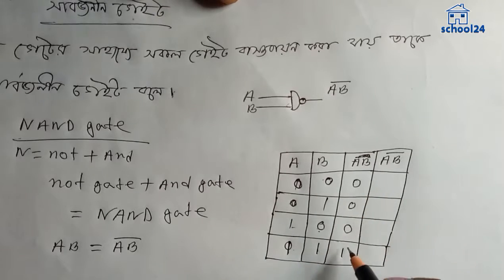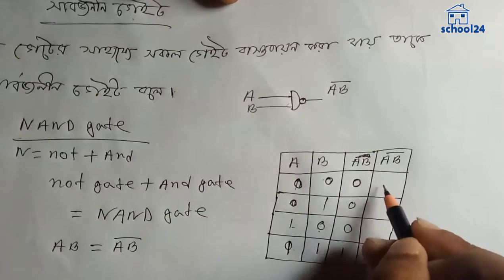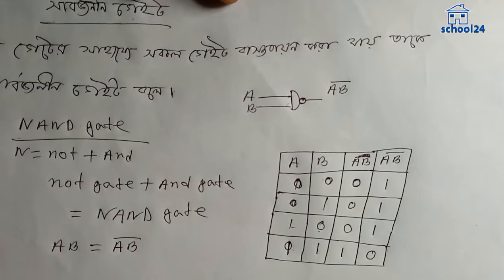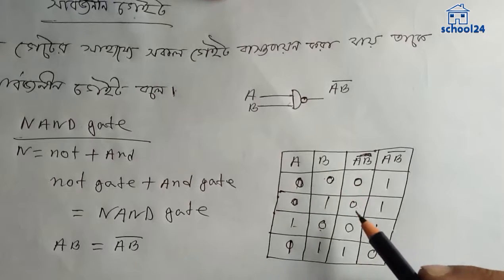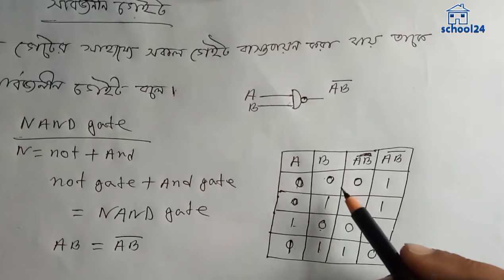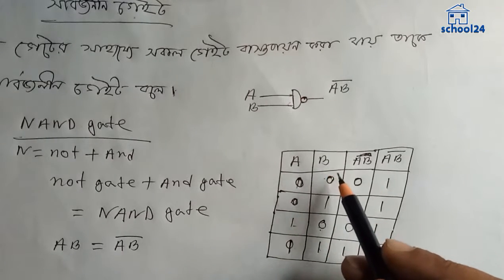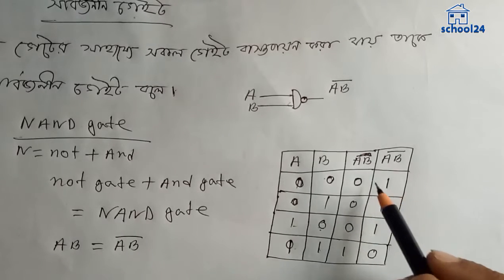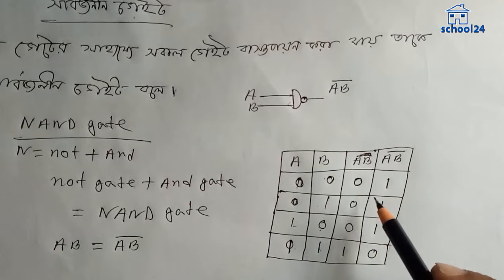તાકો નેટે કી હોએ — જીરો જીરો ગુન કોલો — N-gate: 0 થાક્લે 1 હોએ જાપે, 1 થાક્લે 0 હોએ જાપે. 1 ઉ€પર એક્ટા 0, 1 ઉ€પર એક્ટા 0. N-gate-ની opposite pole-ને — N-gate-ર meaning: if input is 0 output is 1, if input is 1 output is 0.